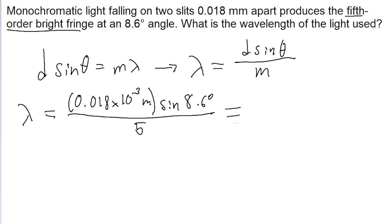So if we put this into a calculator, then we find a wavelength of about 5.4 times 10 to the power of negative 7 meters.